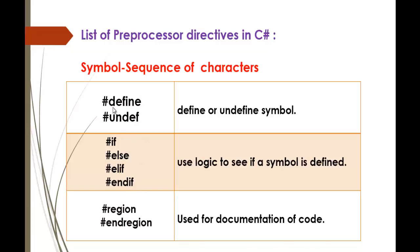These Pre-Processor Directives have their own usage. For example, Define and Undefine are used to define and undefine a symbol. A symbol is a sequence of characters. We also have four Pre-Processor Directives: If, Else, Elif, and Endif.